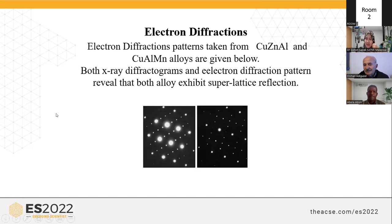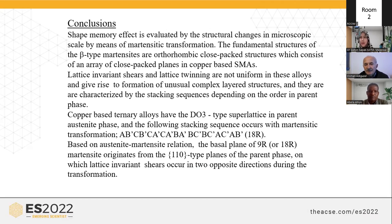A second experimental study was performed using electron microscopy. Electron diffraction patterns also show superlattice reflections. In conclusion, the shape memory effect is evaluated by structural changes at the microscopic level by means of martensitic transformation. The fundamental structure of beta-type martensites is an ordered close-packed structure consisting of an array of close-packed planes in the parent-phase-based shape. Lattice invariant shears and lattice twinning are characterized by the stacking sequences depending on the order in the parent phase.